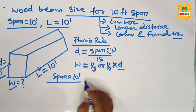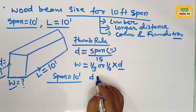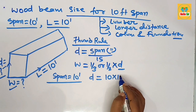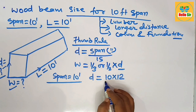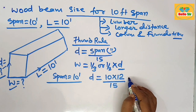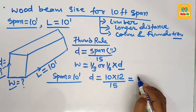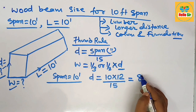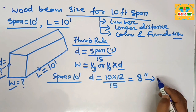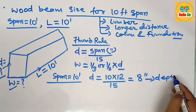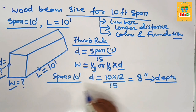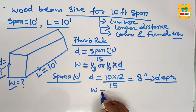For a 10-foot span, the depth section of the beam is calculated as: 10 multiplied by 12, divided by 15, which comes to about 8 inches. So the depth section of the beam is 8 inches.